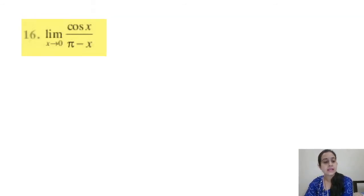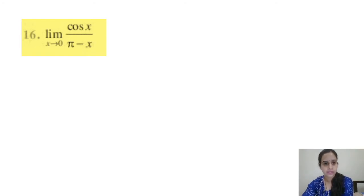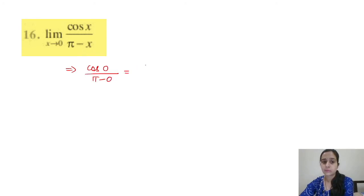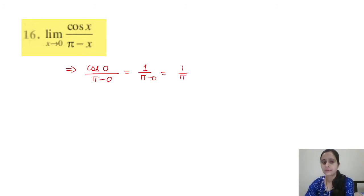Question 16: limit x tends to 0, cos x divided by (π − x). Substituting x = 0: cos 0/(π − 0) = 1/π.